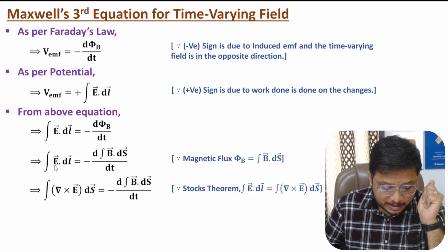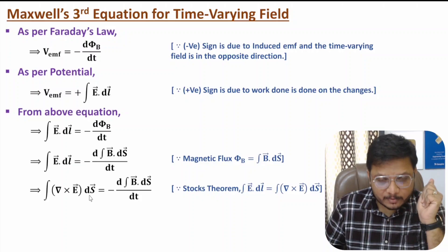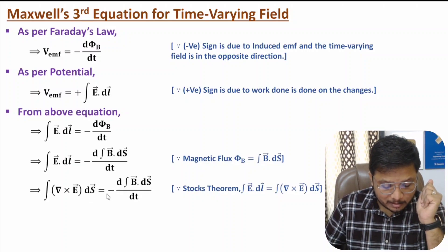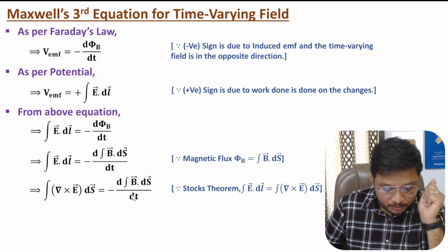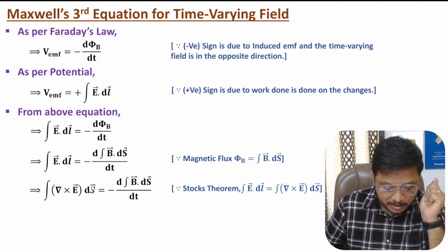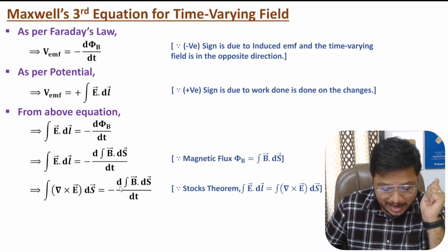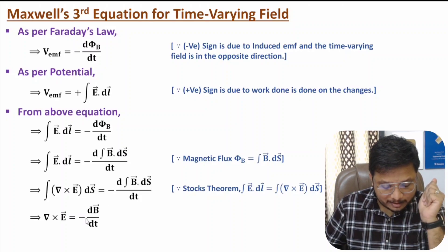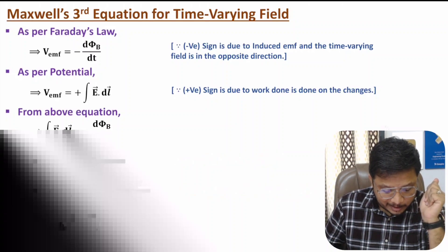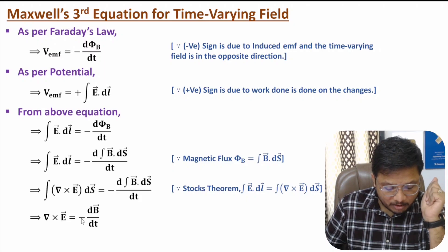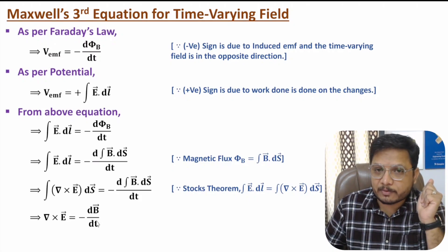Using Stokes' theorem, we can express the line integration of electric field in terms of surface integration in order to cancel out the integration. Doing so gives us del cross E equals negative del B by del t. So the curl of electric field equals the negative of the rate of change of magnetic field with respect to time.